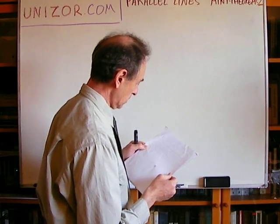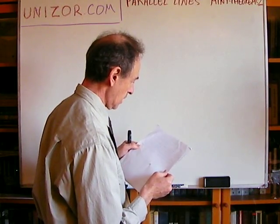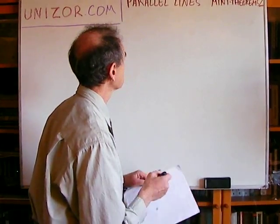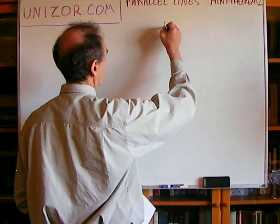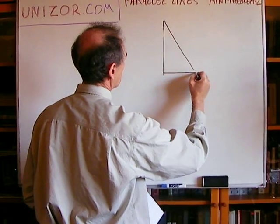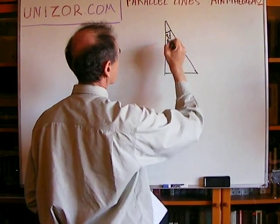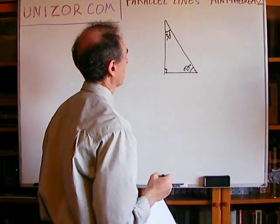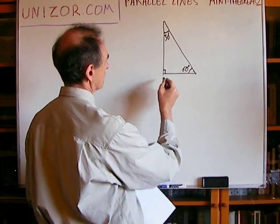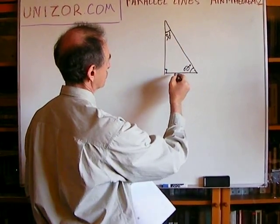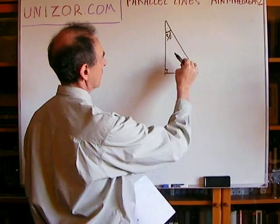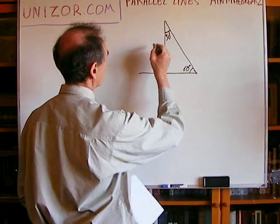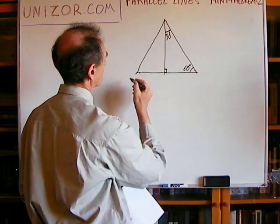In the right triangle with one acute angle of 30 degrees, the leg opposite to this angle is equal to half of the hypotenuse. So you have a 30-degree right triangle, and this angle is obviously 60 degrees. I have to prove that the shorter leg, which is across the 30-degree angle, is half the hypotenuse. It's very simple — let's continue on this side.